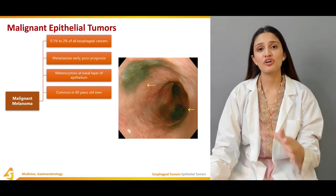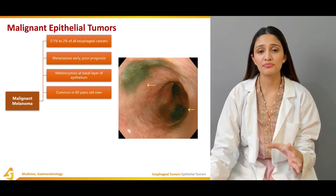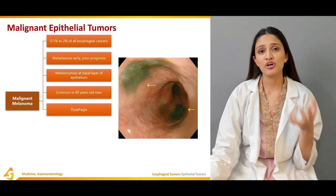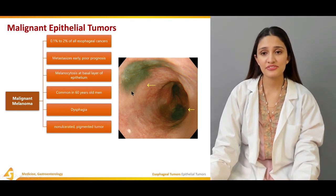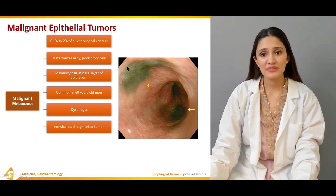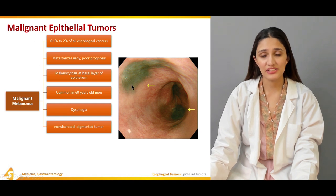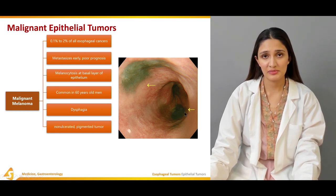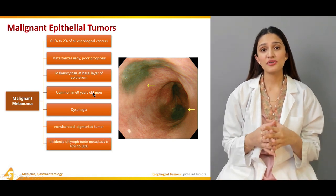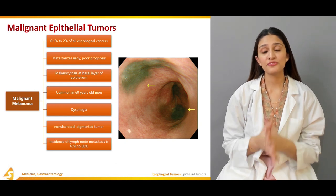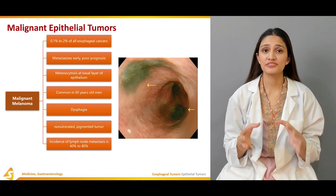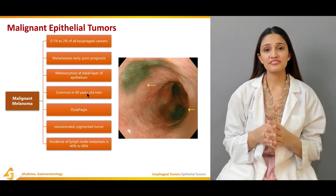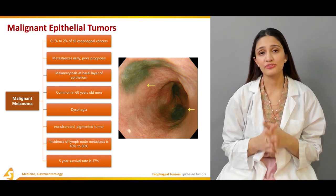Malignant melanoma is more common in patients around 60 years old with male predominance, and the most common symptom is dysphagia. It is a non-ulcerated, pigmented tumor. Endoscopically, you can see a pigmented melanocyte-containing area within the mucosal surface. The incidence of lymph node metastasis is around 40 to 80%, and it can also metastasize to regional lymph nodes. The 5-year survival rate is around 37%.